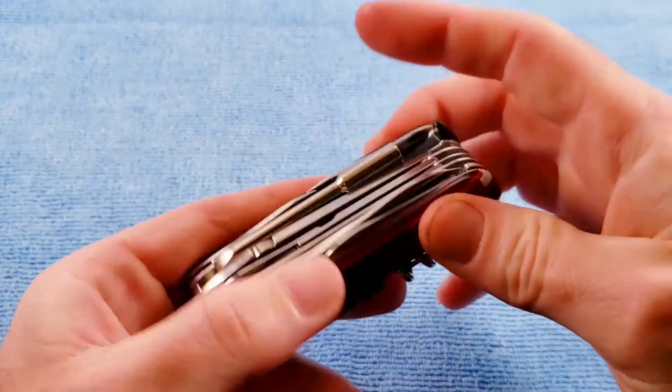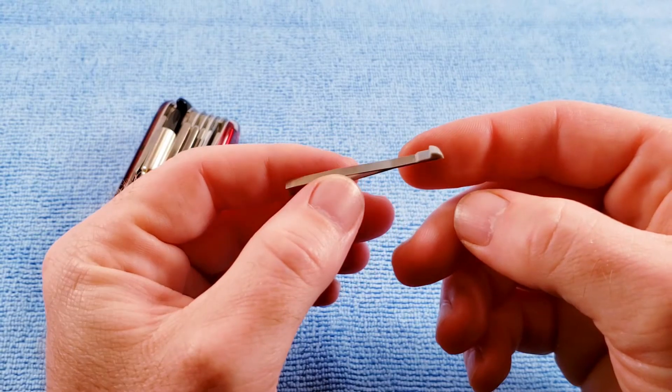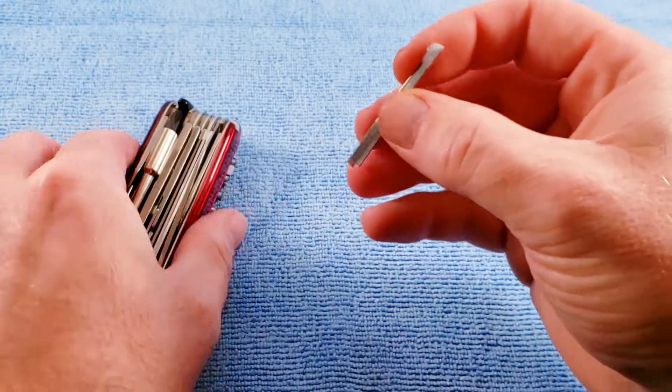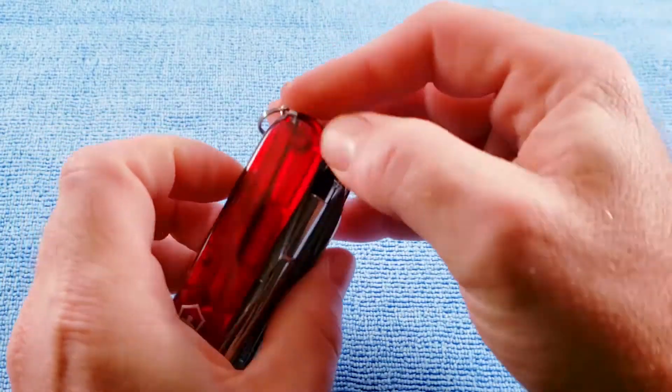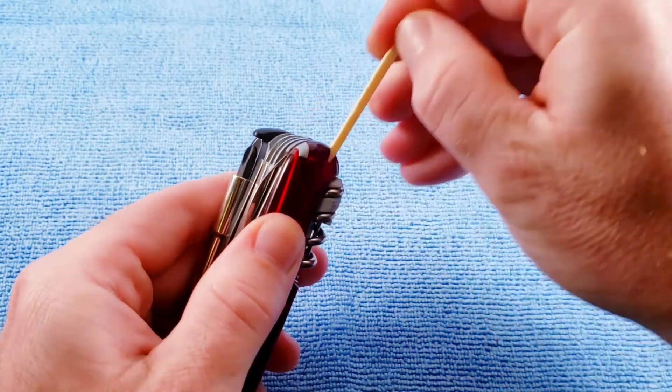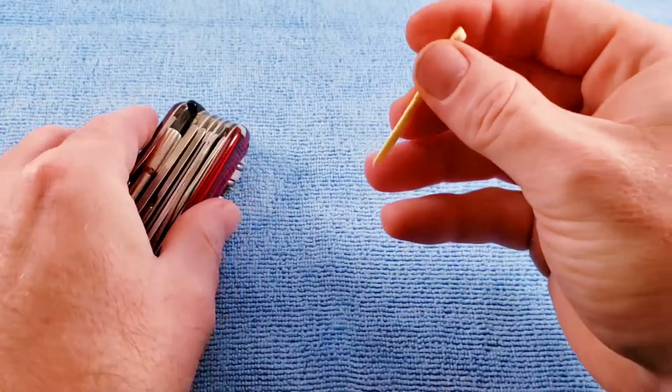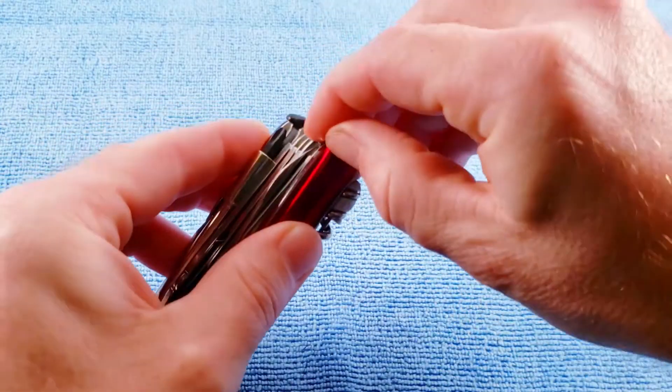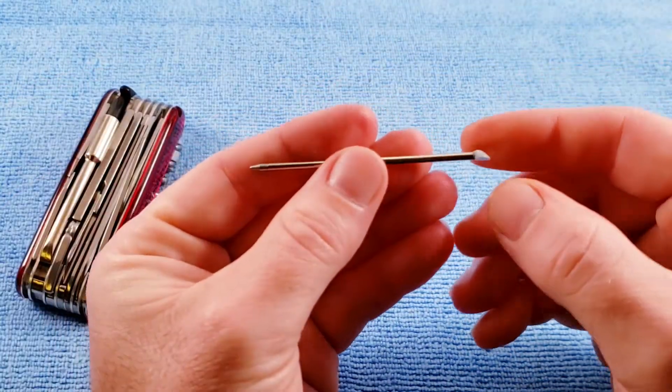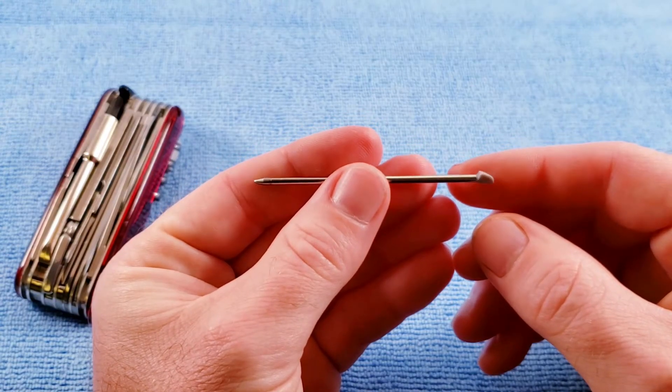And then our scale tools. So we get the tweezers with the post-78 plastic tip. The toothpick. And the pressurized space pen that writes in blue ink.